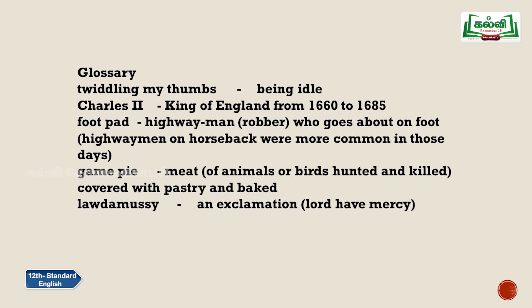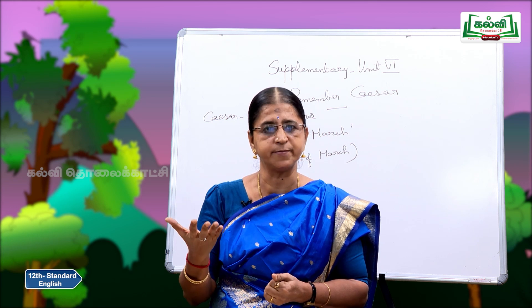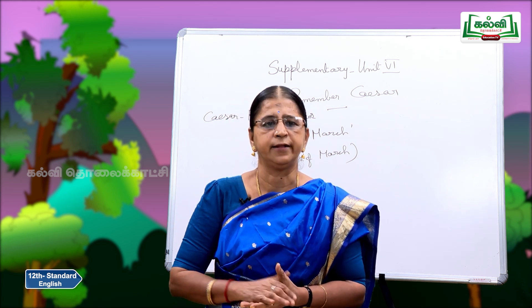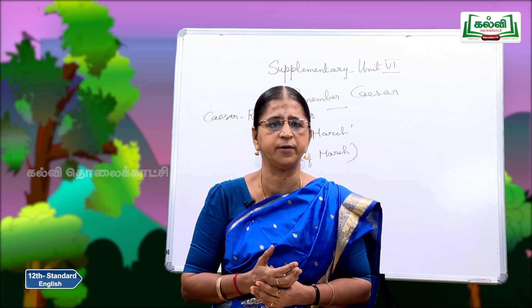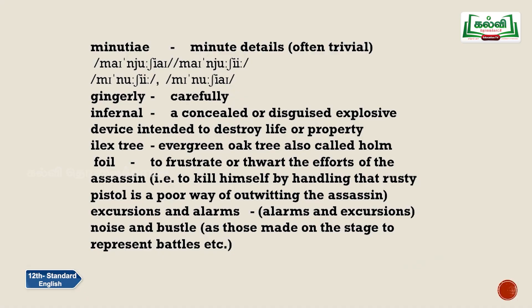'Game pie' is meat covered with pastry and baked — it may be the meat of animals or birds that have been hunted and killed. 'Lordamissi' is a contraction of 'Lord have mercy' said rapidly — it is an exclamation like 'Oh God!' The next word is 'minutiae' (M-I-N-U-T-I-A-E), pronounced minutiae — it refers to minute, often trivial or unimportant details.